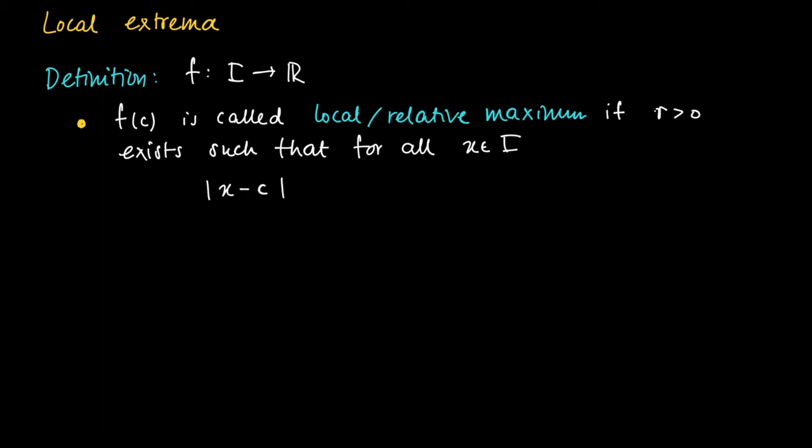The absolute value of x minus c, if the distance from x to c is smaller than r, then f(x) is at most f(c). So if we are nearby c, we see that the function values are lower than or equal to f(c).